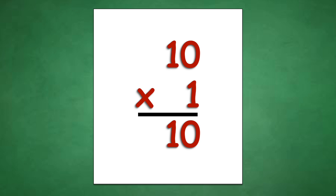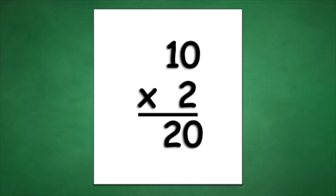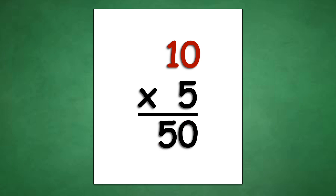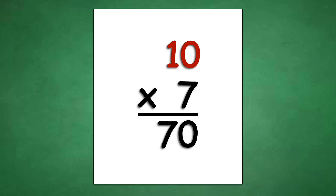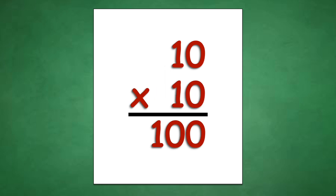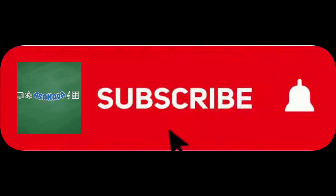Table of 10: 10 times 1 equals 10, 10 times 2 equals 20, 10 times 3 equals 30, 10 times 4 equals 40, 10 times 5 equals 50, 10 times 6 equals 60, 10 times 7 equals 70, 10 times 8 equals 80, 10 times 9 equals 90, 10 times 10 equals 100. Thank you for watching.